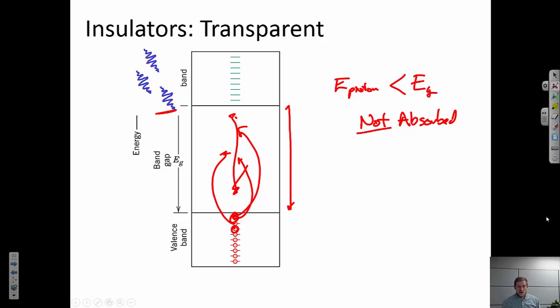So most insulators have very large band gaps, and band gaps that are large enough that all of the optical frequencies of light do not have enough energy to excite an electron all the way across that band gap. In other words, the band gap of insulators, or of transparent materials, is greater than the energy of visible photons.